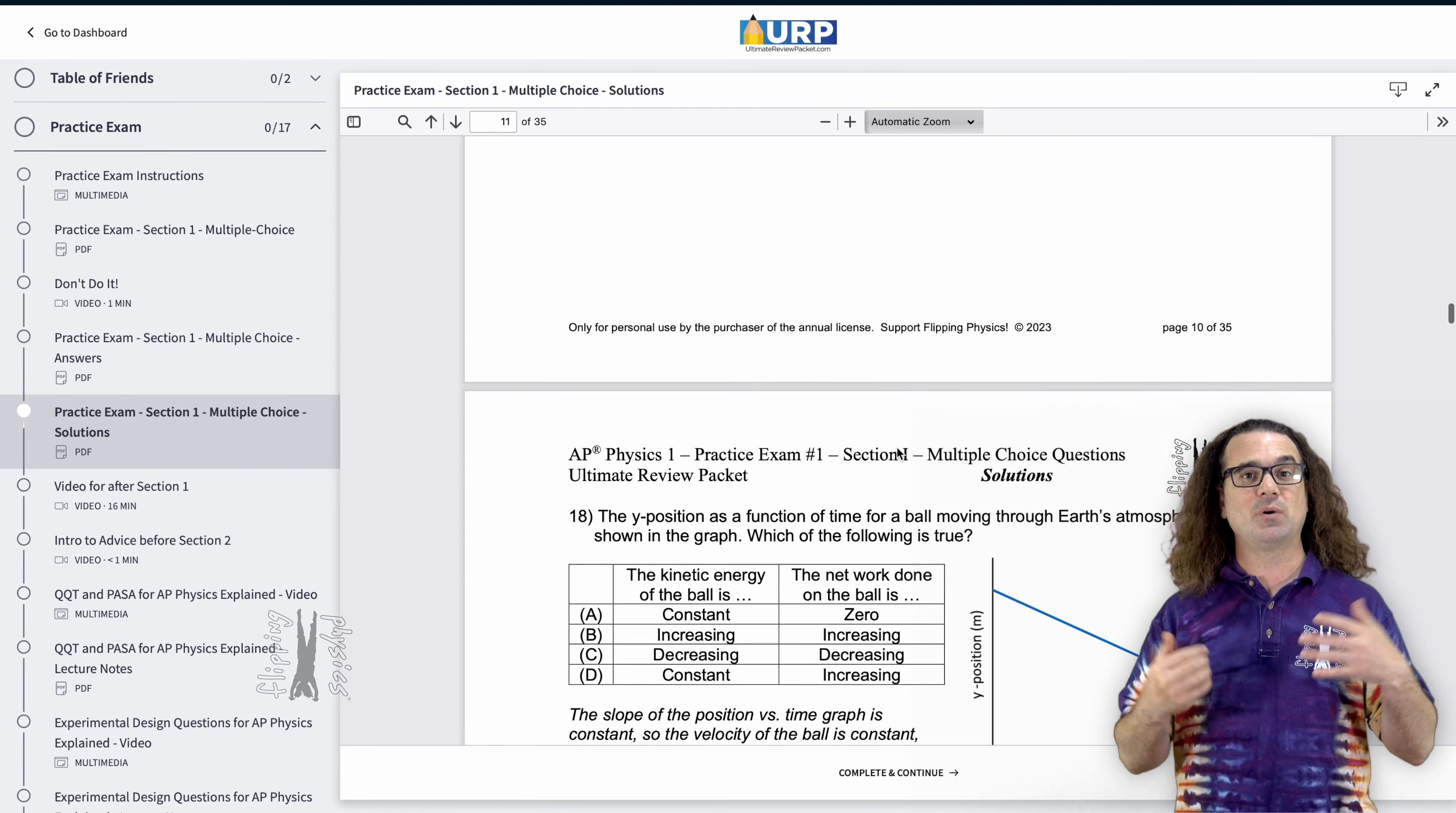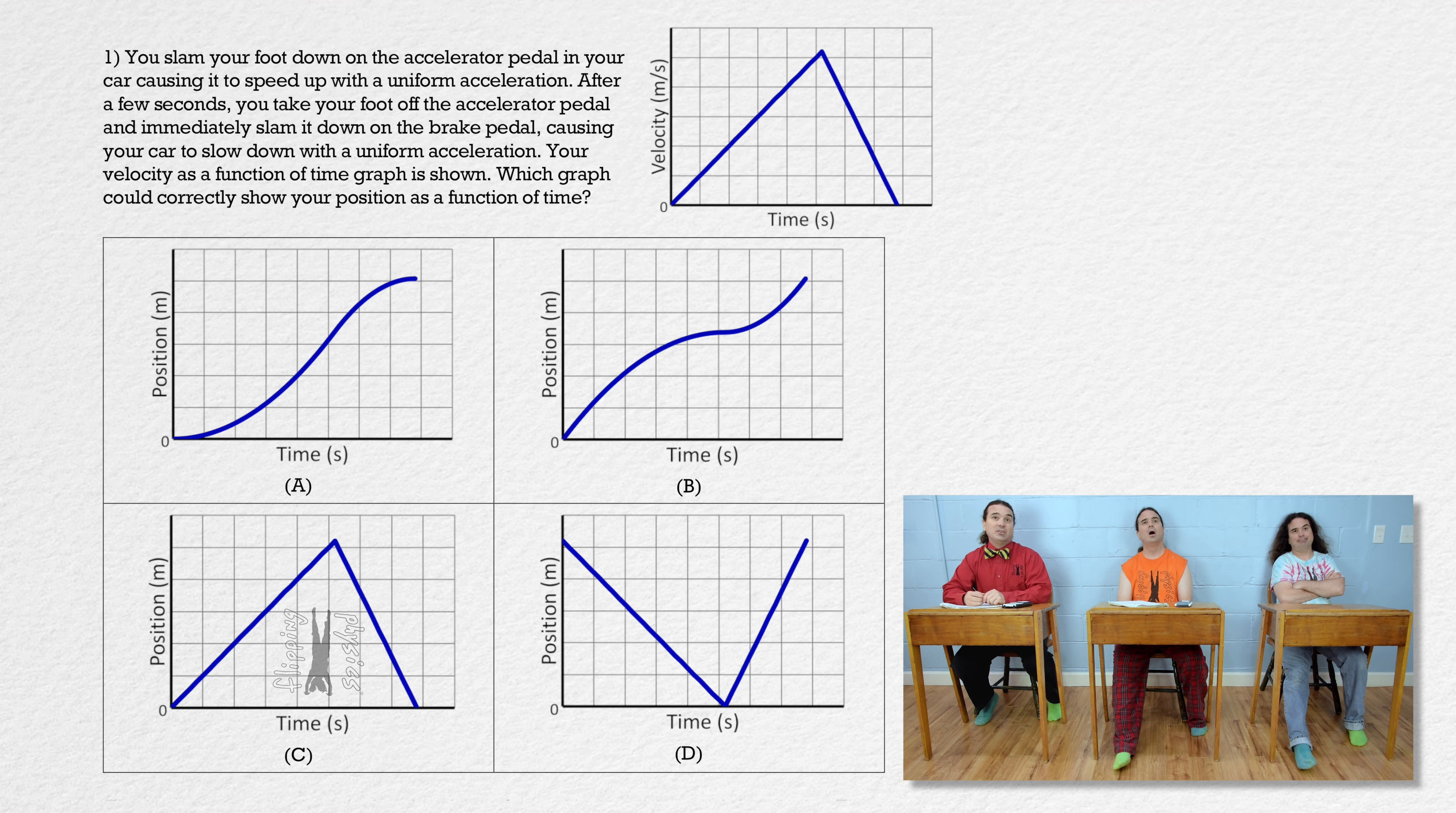Billy, please read this one. Question 1: You slam your foot down on the accelerator pedal in your car causing it to speed up with a uniform acceleration. After a few seconds, you take your foot off the accelerator pedal and immediately slam it down on the brake pedal causing your car to slow down with a uniform acceleration. Your velocity as a function of time graph is shown. Which graph could correctly show your position as a function of time?